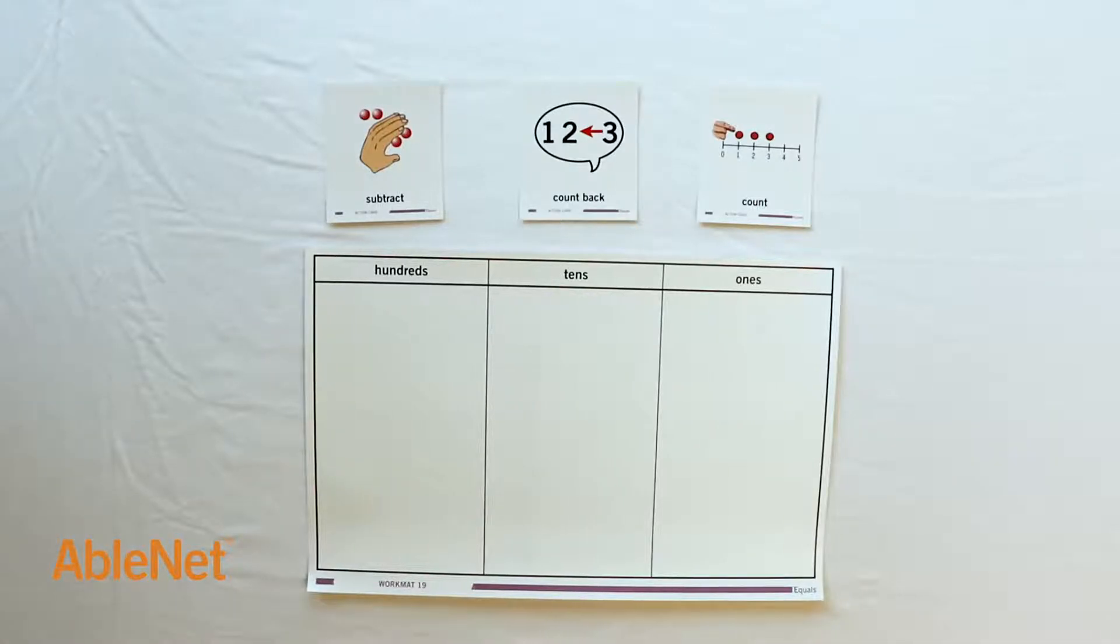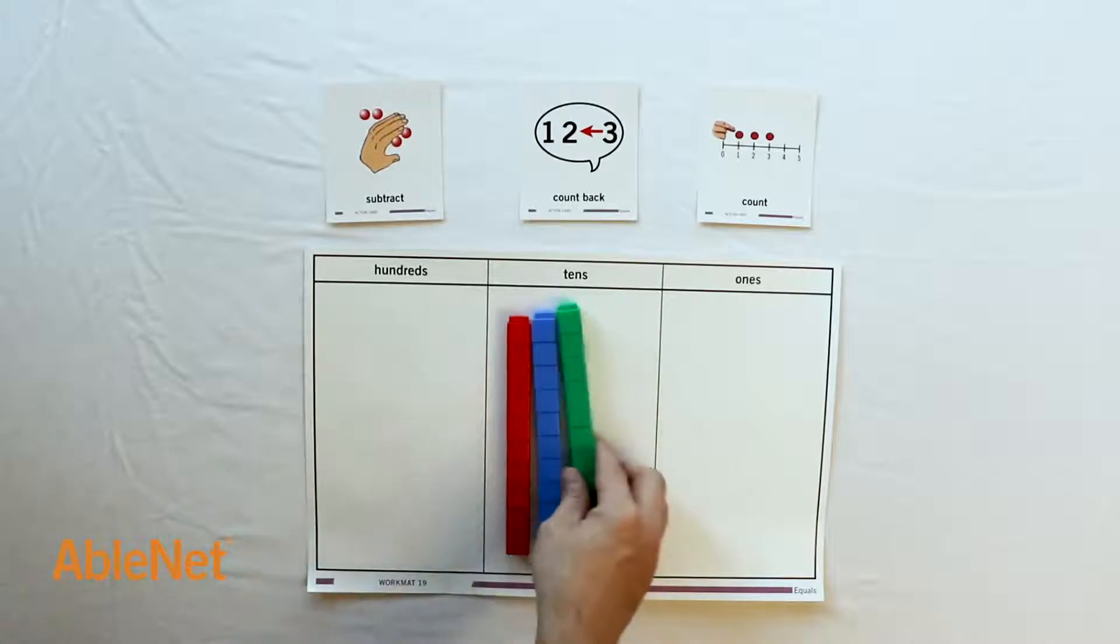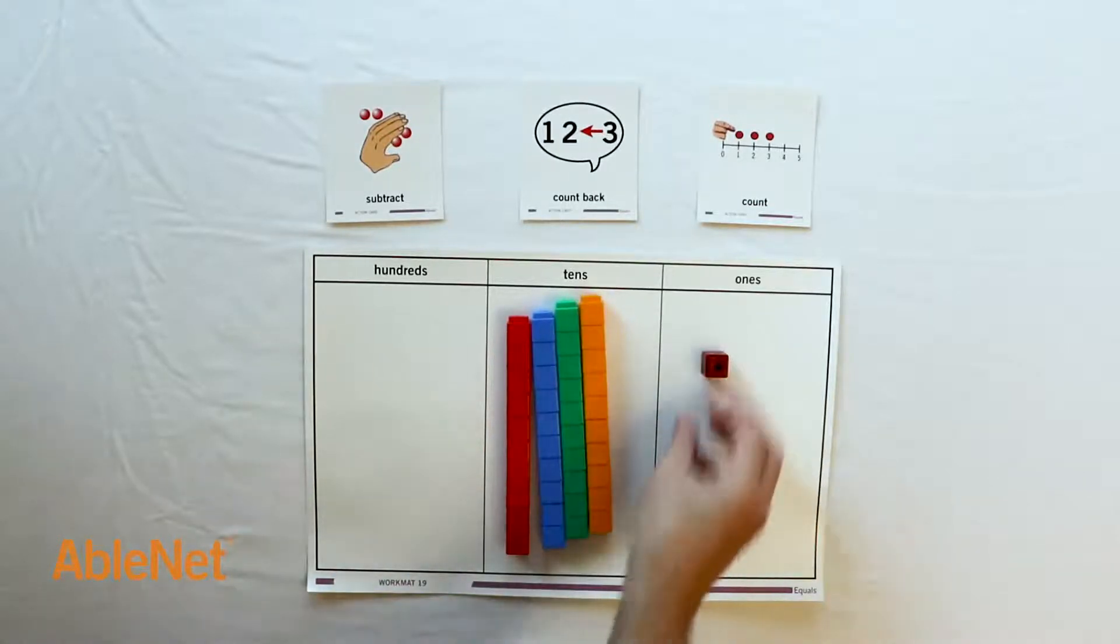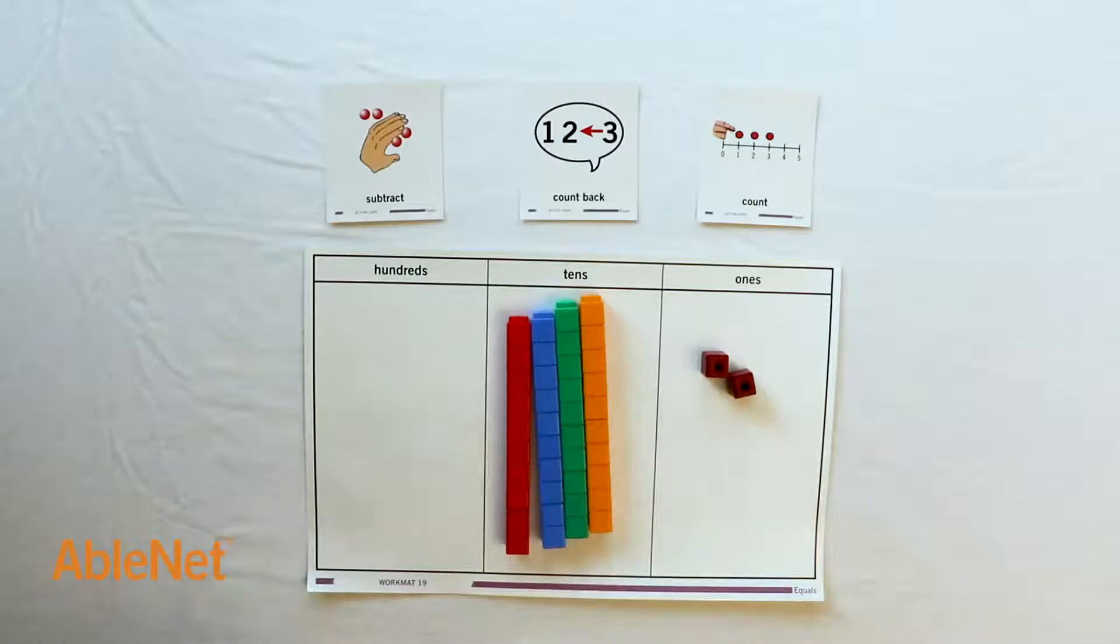I'll begin by placing the start amount, 42, on the place value chart. Now we need to subtract our result of 14. We don't have enough in the ones place, so we will have to regroup a set of 10 from the tens place.